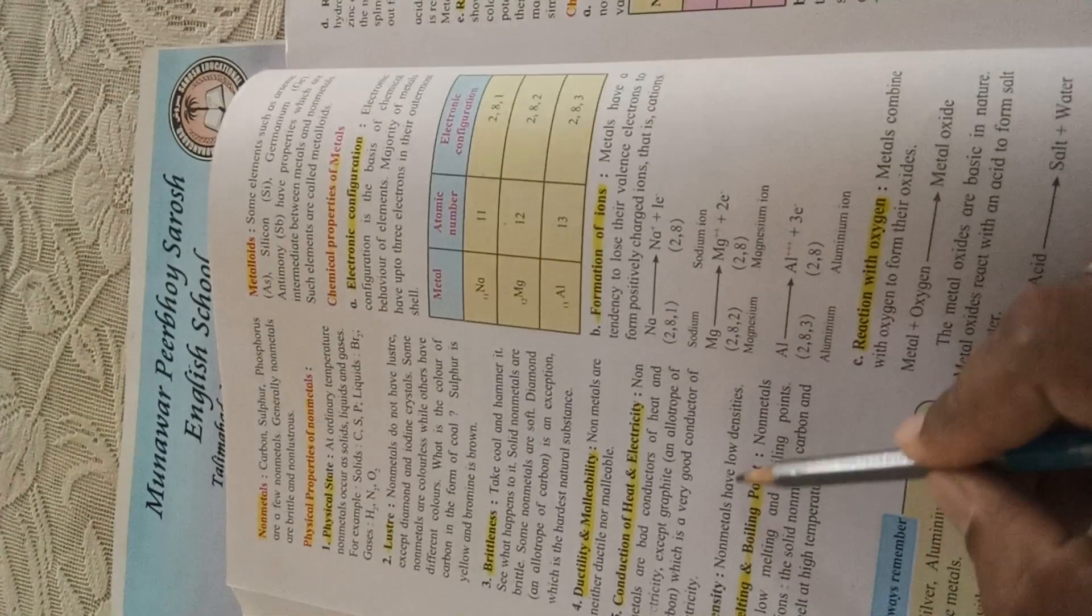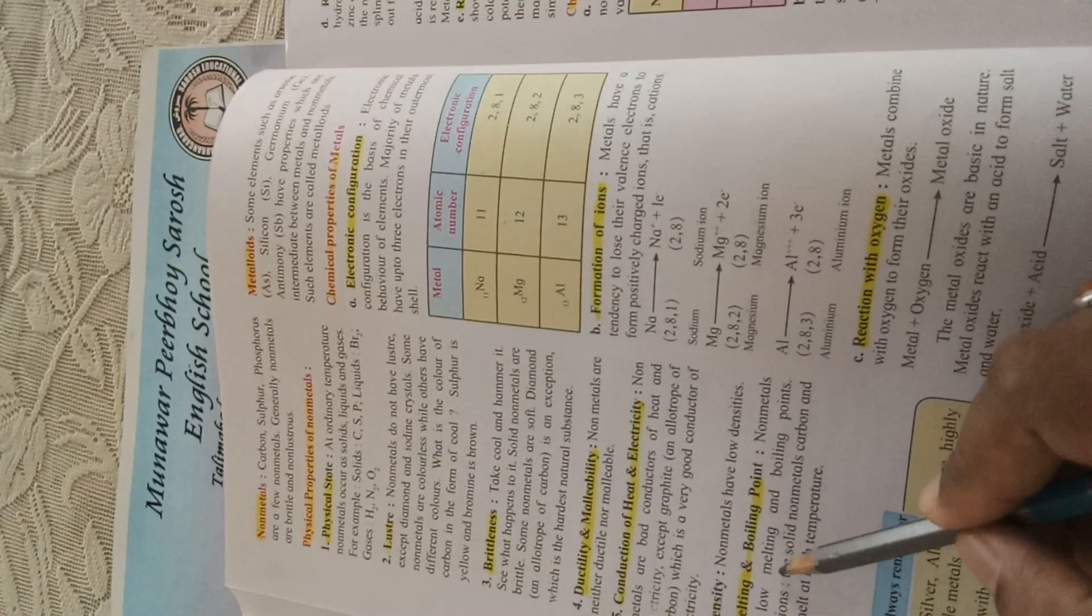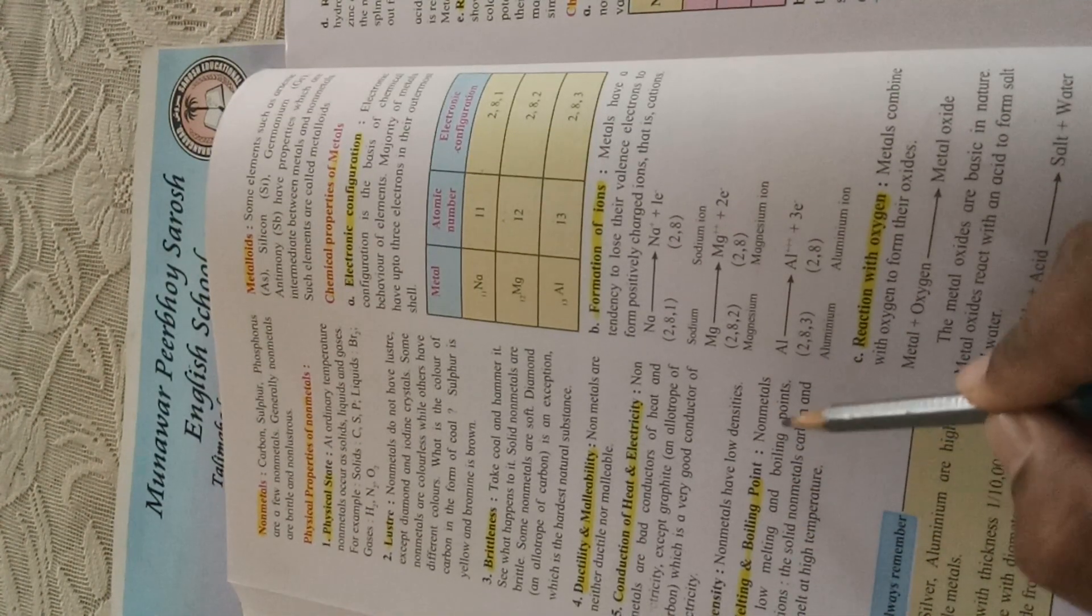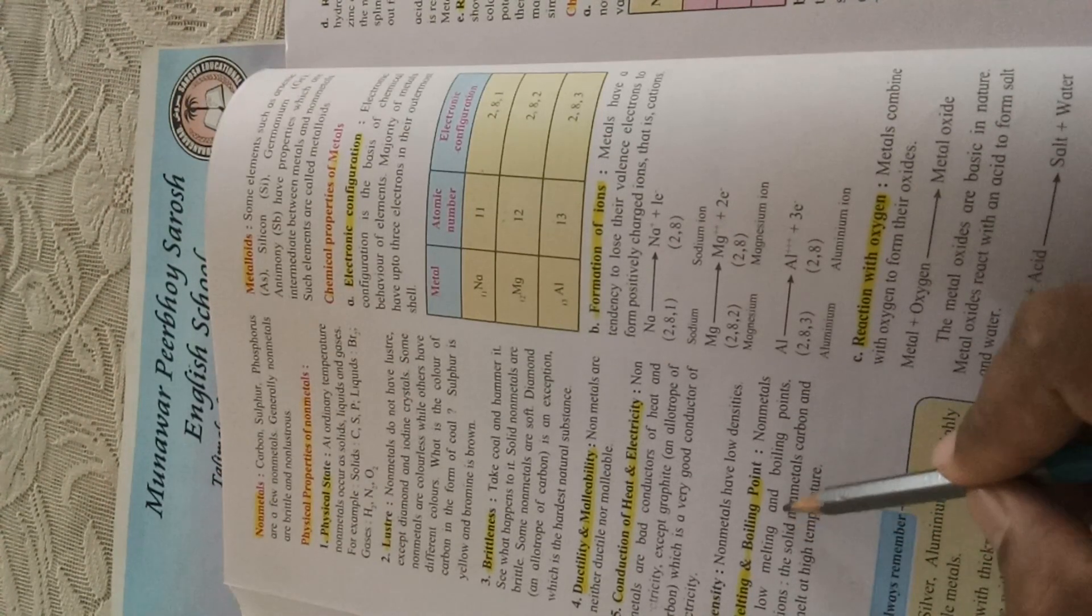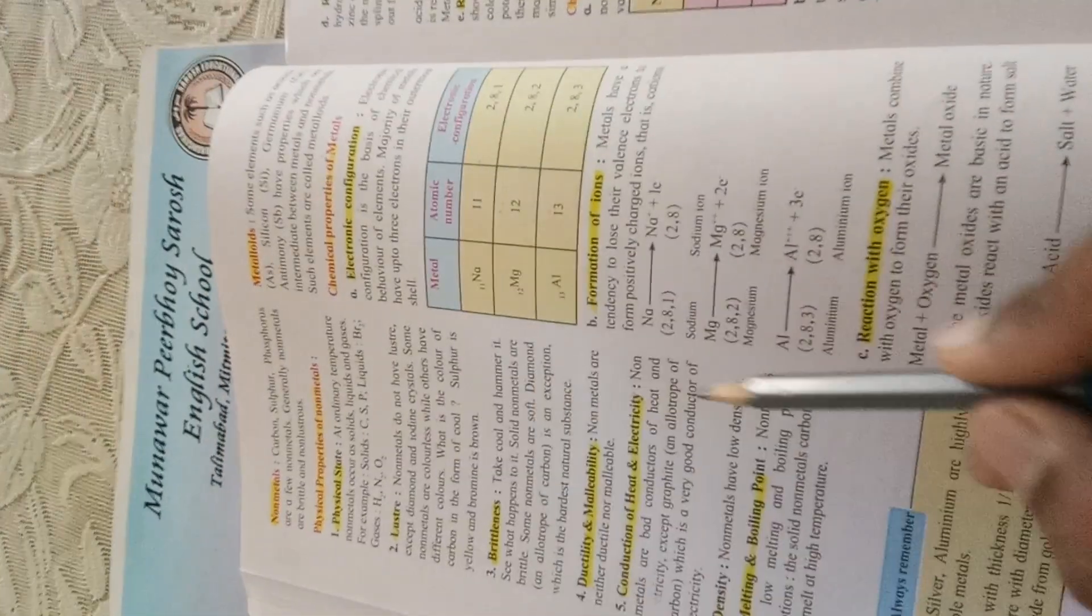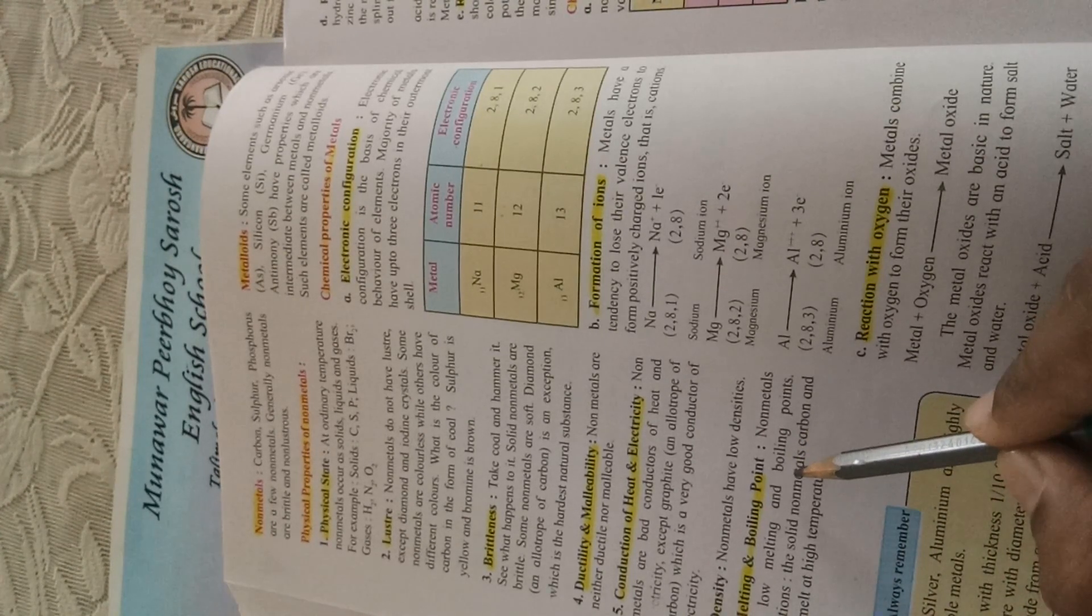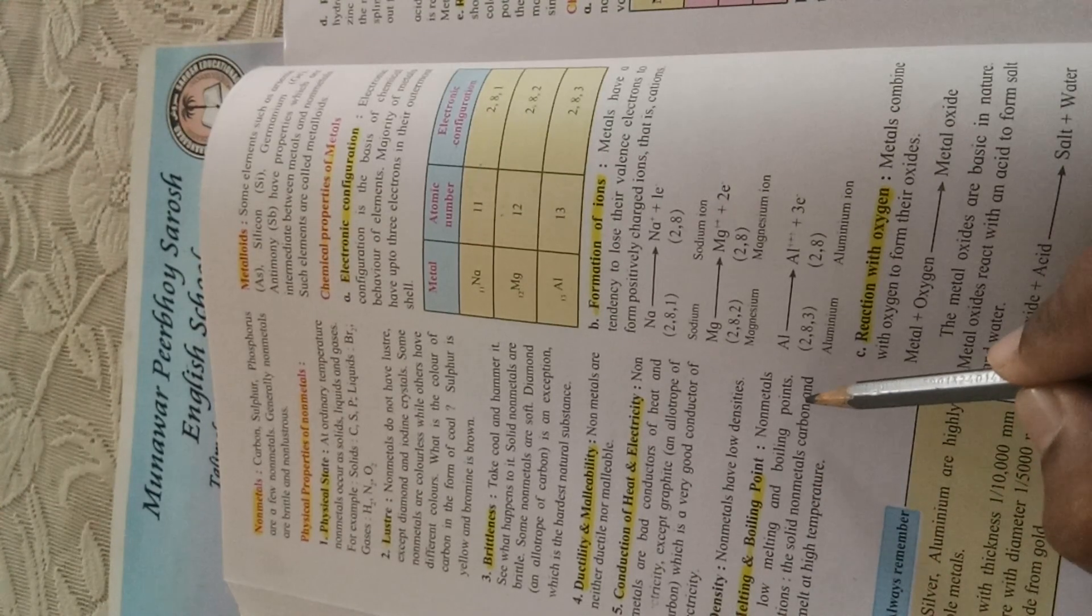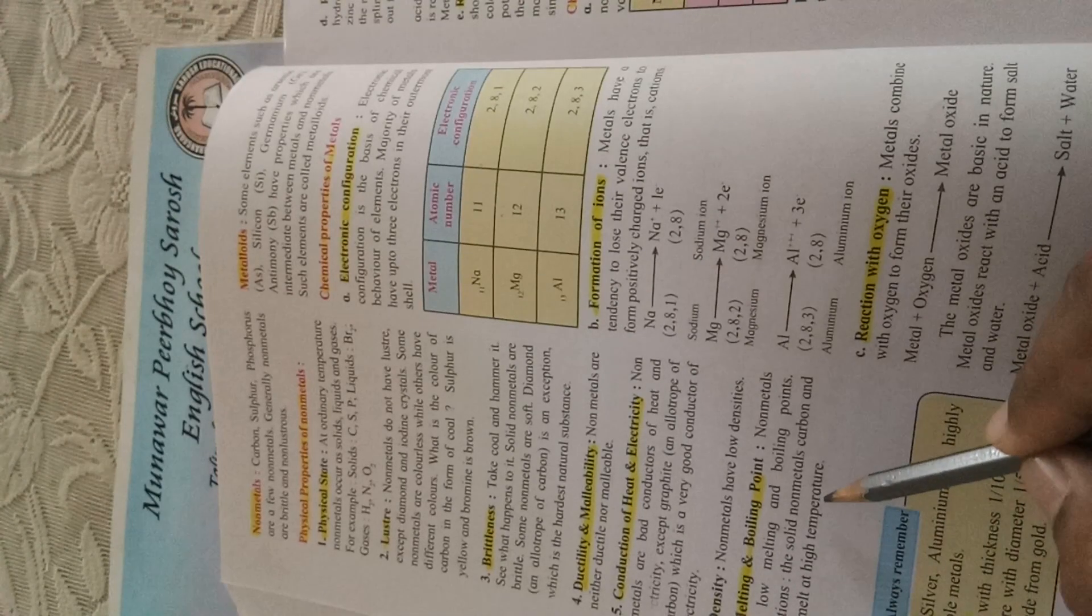Density—nonmetals have low densities. Number seven: melting and boiling point. Nonmetals have low melting points and boiling points. As they are brittle and soft in nature, their melting and boiling points are very low compared to metals. Exceptions: the solid nonmetals carbon and boron melt at high temperatures.